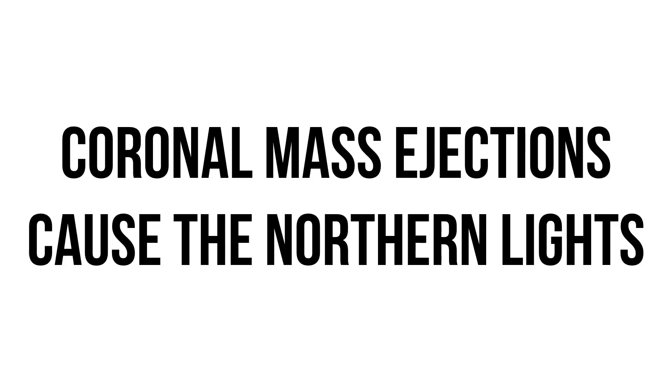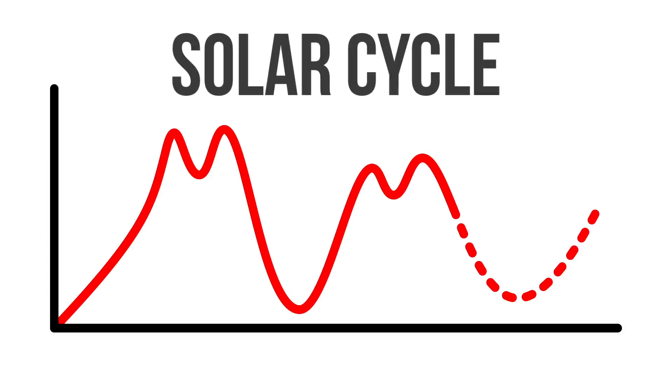As we know, coronal mass ejections cause the northern lights. These huge explosions occur more when the sun is more active, and less when the sun is less active. Sun activity follows an 11-year cycle, called the solar cycle.